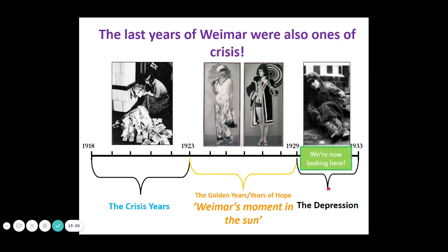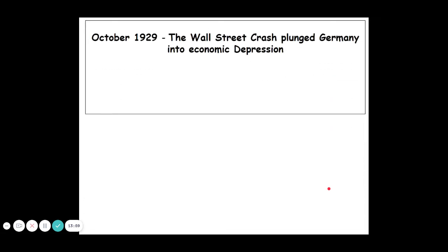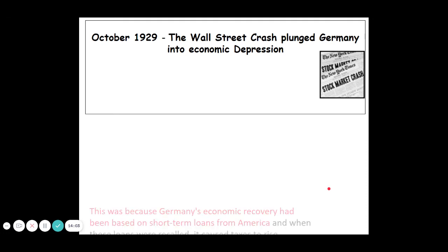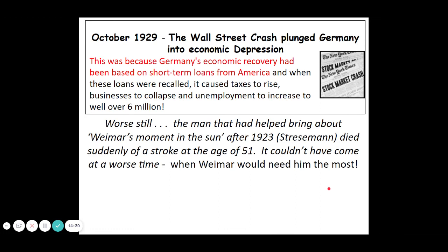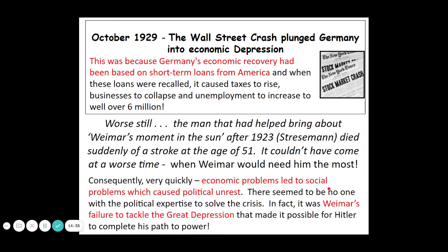However, these things unfortunately do not last. The Wall Street Crash in October of 1929 plunged Germany into economic depression. And unfortunately Stresemann had died earlier that month, so he was not able to arrange other deals or loans. The German economy really struggled — those American loans were pulled, there were huge tax rises, businesses collapsed, and unemployment increased to well over 6 million people. The man who had helped bring stability about had died of a sudden stroke at age 51, which could not really have come at a worse time for the Weimar Republic. The Weimar's failure to tackle the Great Depression was the thing that made it possible for Hitler to complete his path to power.